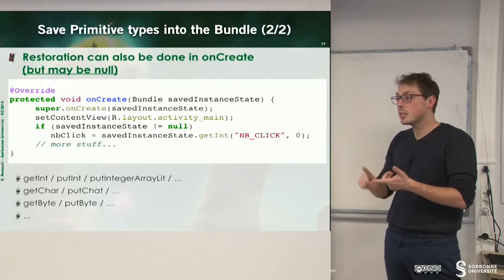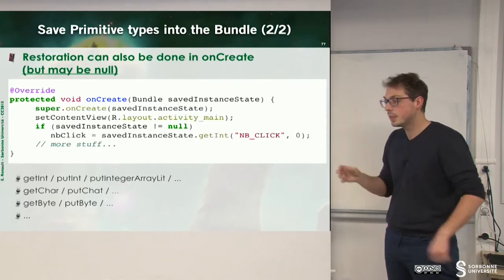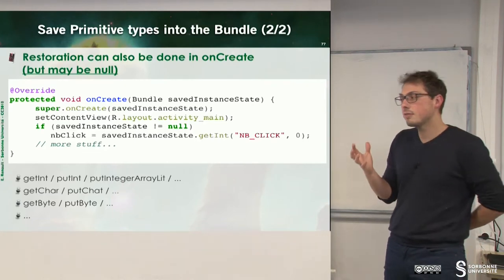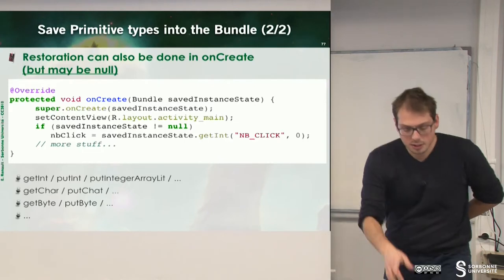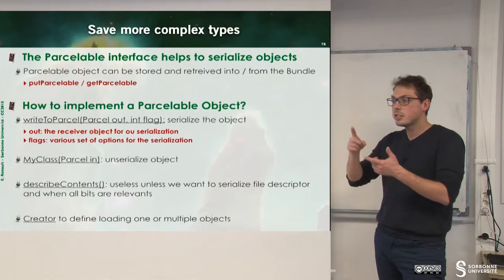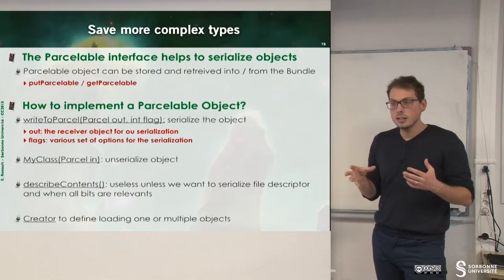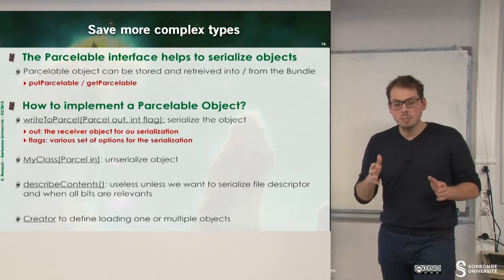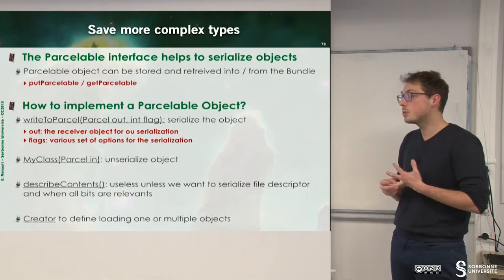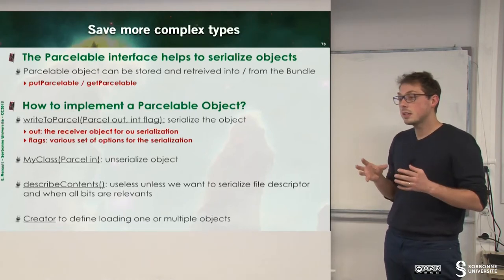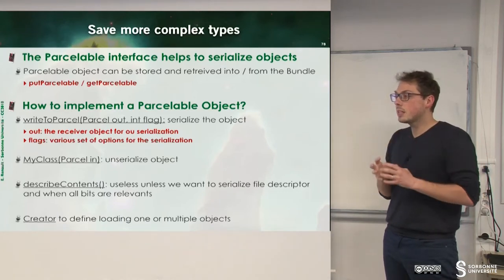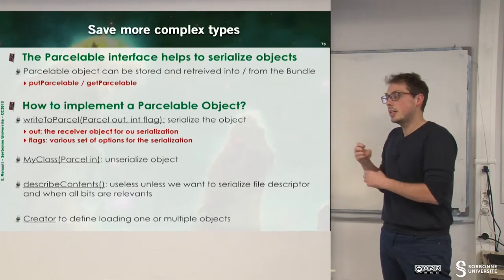But sometimes you have to save more complex values — for instance, a more complex value could be a person with age, name, first name, and so on. To do that, we have to implement the Parcelable interface. The Parcelable interface helps to serialize objects. It means that we will find a way to describe our object so that it can be handled by the bundle.